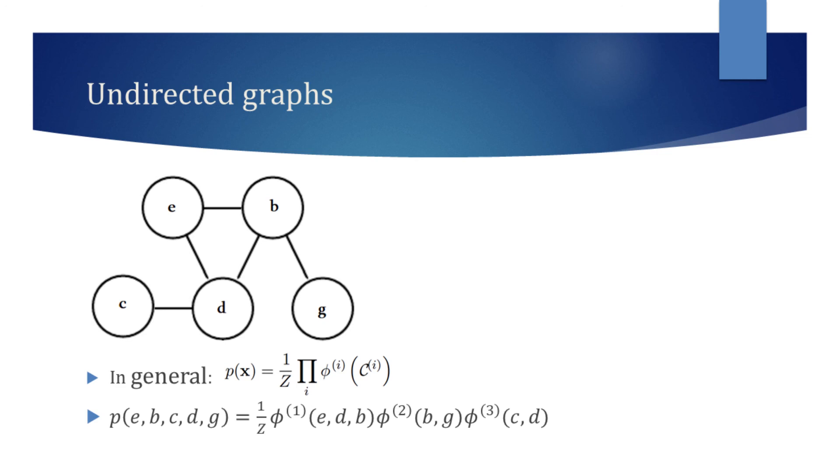First, we write a normalizing constant. Then we see that e, b, and d are all connected to each other, meaning they form a clique, so we write one function for them.